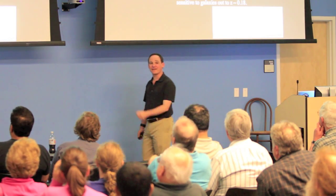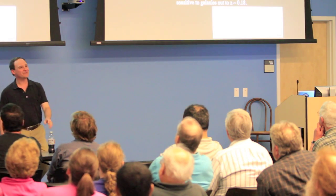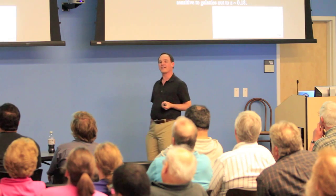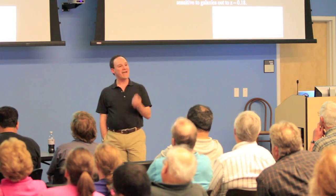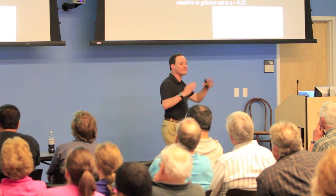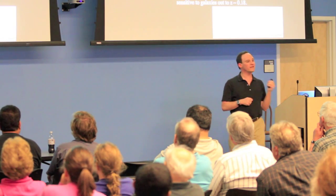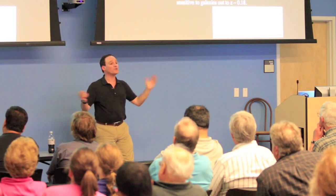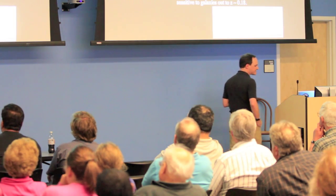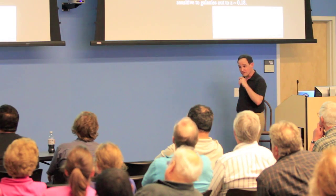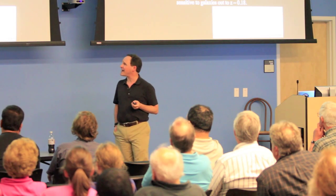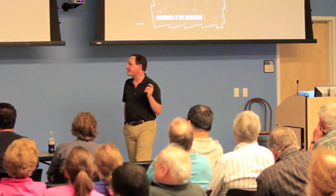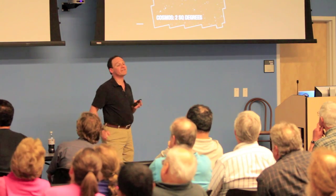For this, I want to present a survey we're doing called CHILES — the COSMOS H1 Large Extragalactic Survey. It takes advantage of the newly improved Very Large Array, which was built in the late 1970s and underwent a massive upgrade over the past decade. They expanded the frequency range and improved the sensitivity, giving us the ability to do a redshift survey from zero up to 0.4 in neutral hydrogen all in one go. We did a pilot survey of about 60 hours going up to about 0.18, and we're about halfway through the full survey with around 400 hours collected.